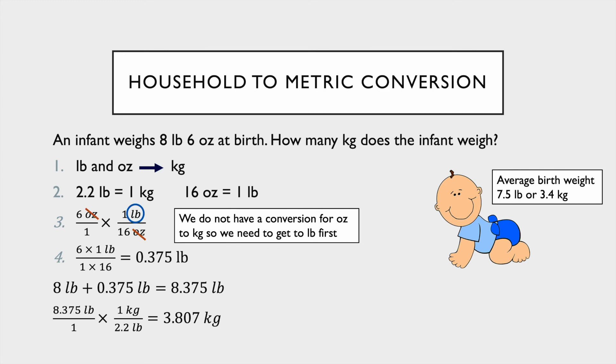We have our 2.2 pounds equals 1 kilogram. Again, start with what we know. The pounds have to go on the bottom to cancel out with the pounds on the top. Cancel, cancel, we end up with our kilograms and we get 3.807, rounding to the thousandths place because it is less than 10.